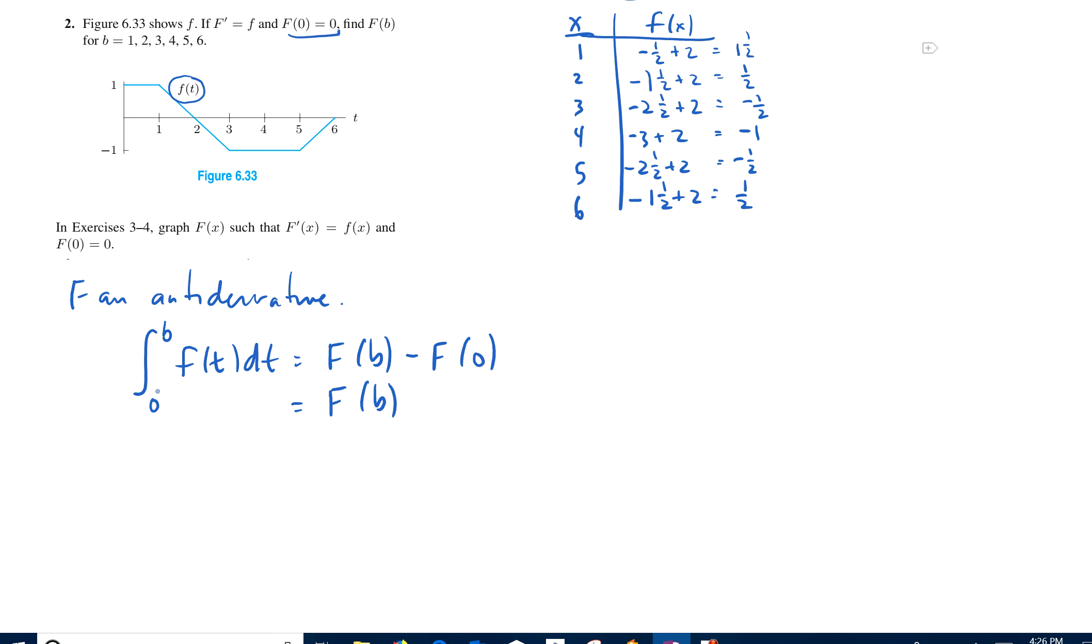So capital F of B is just this integral here, and that integral from A to B is simply the area under the curve, under F of T from zero to B. So let's do, we want to do F of, let's do this like we did on the one over here, B, F of B.